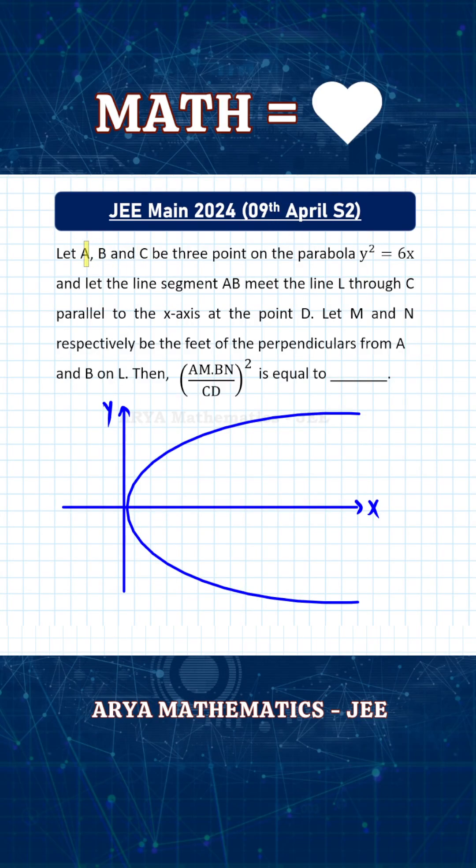Let A, B, and C be three points on the parabola y² = 6x, and let the line segment AB meet the line L, which is passing through C and parallel to the x-axis, at point D. M and N are the feet of perpendiculars from A and B on line L. Then we need the value of this quantity.